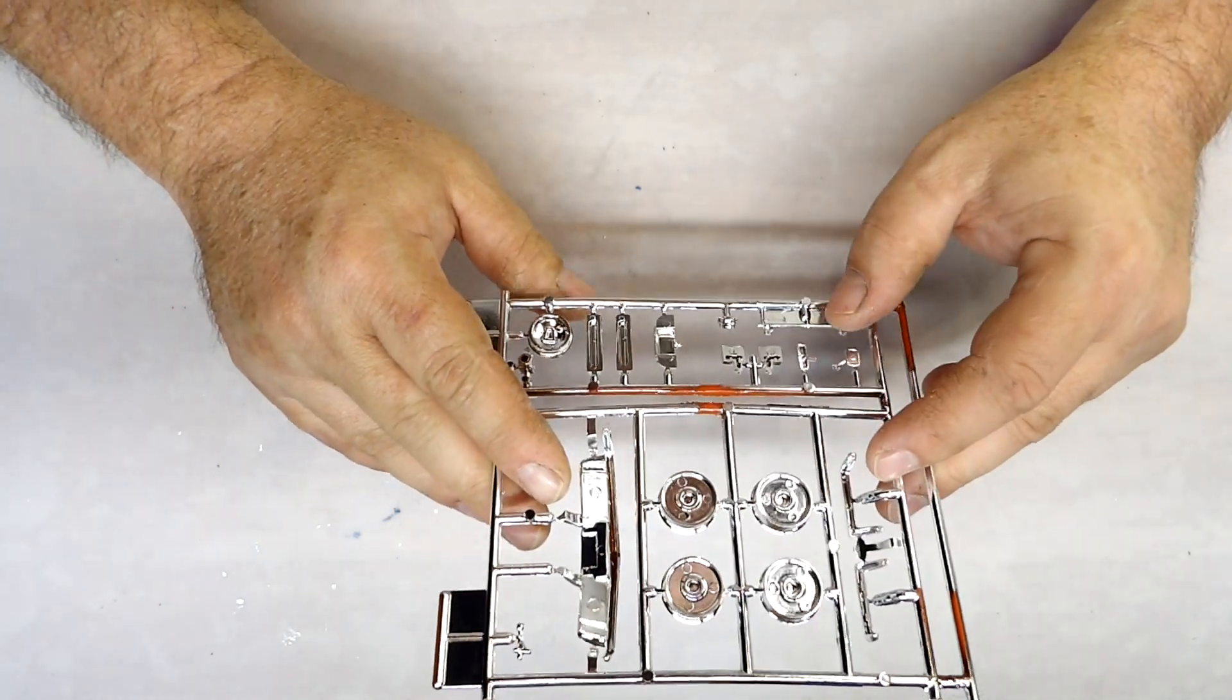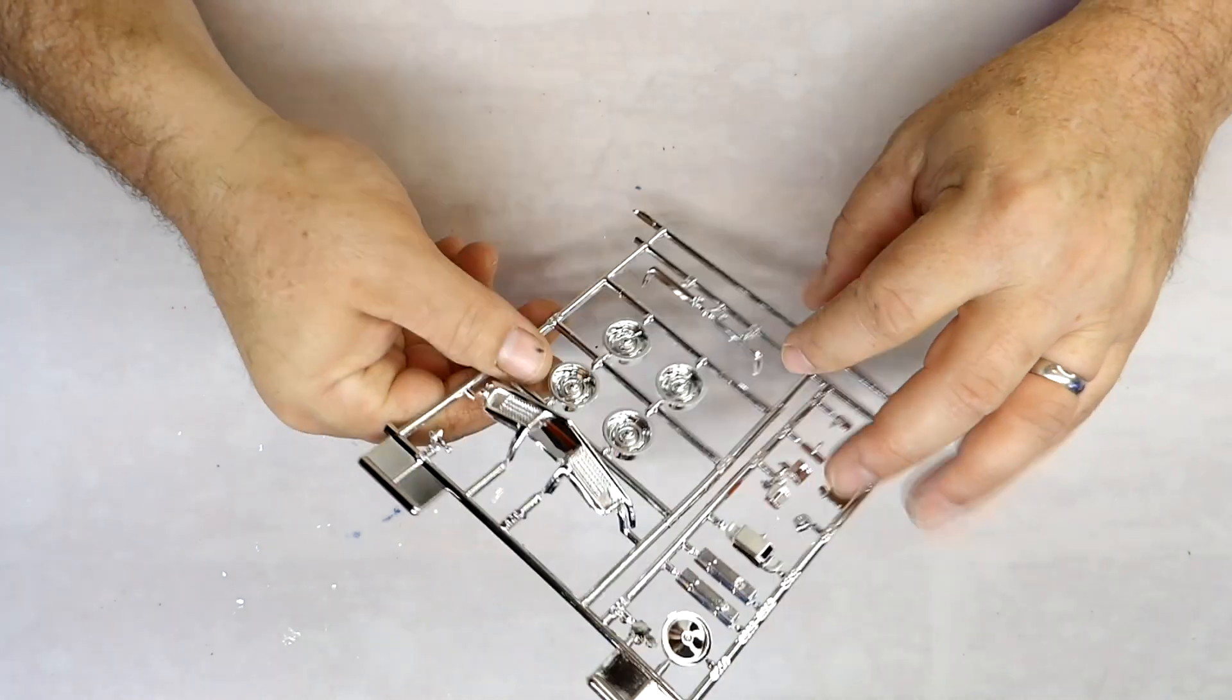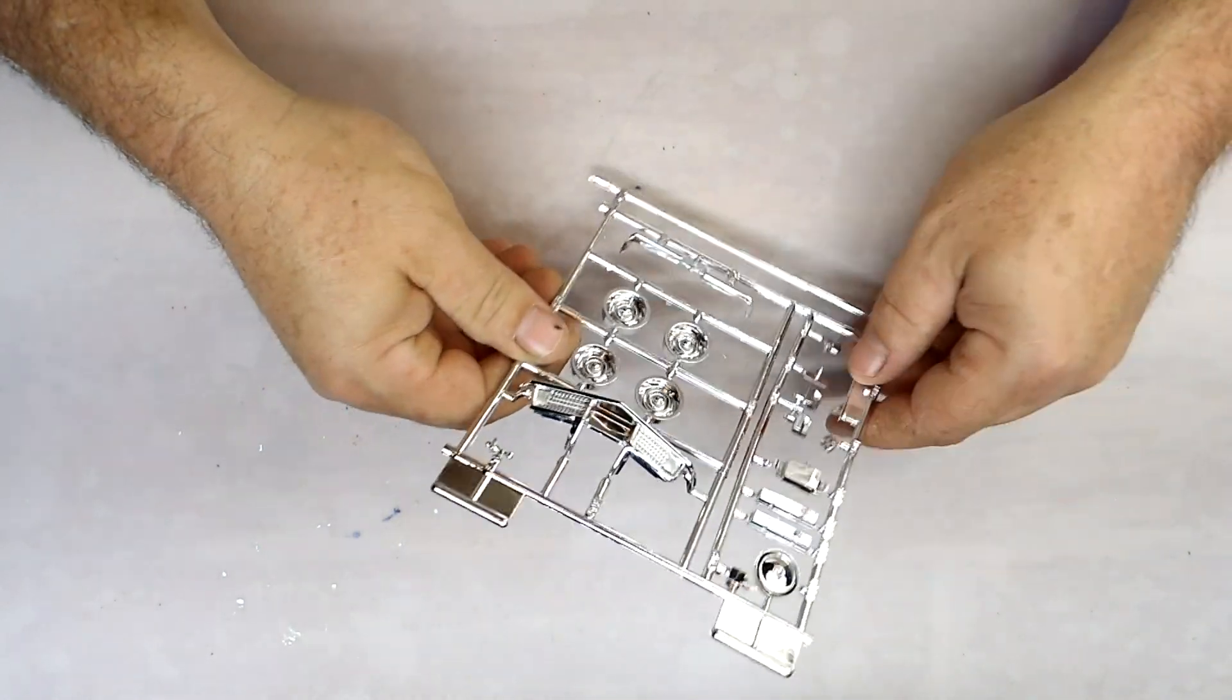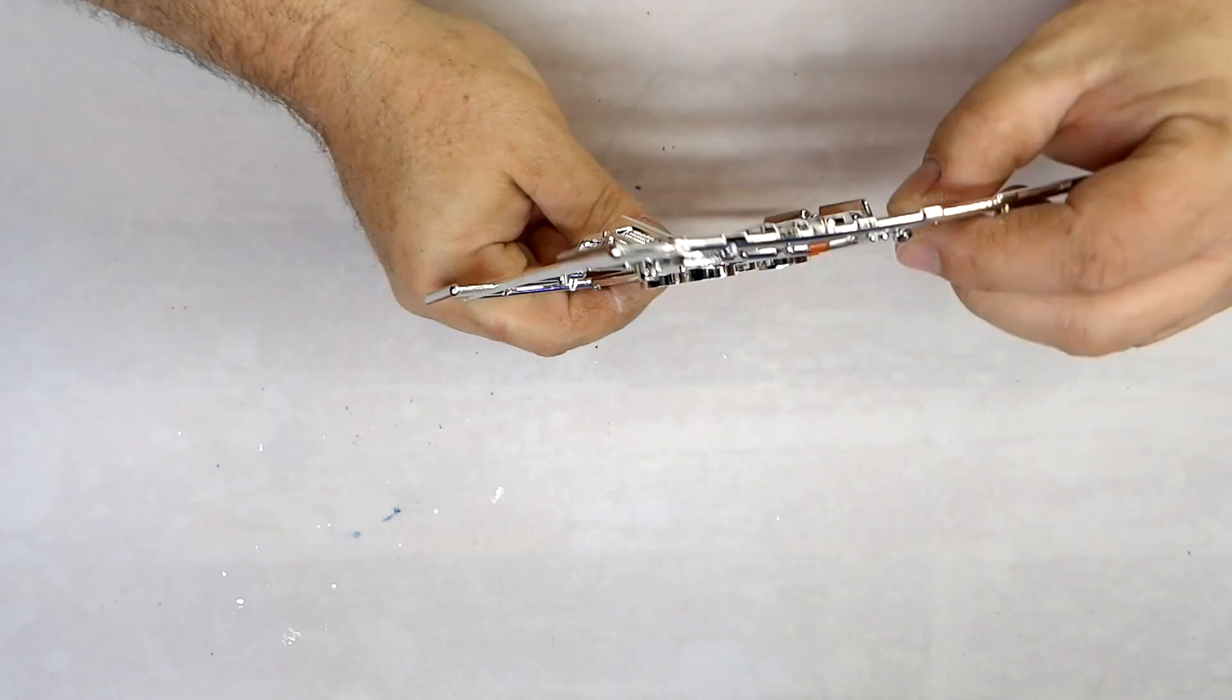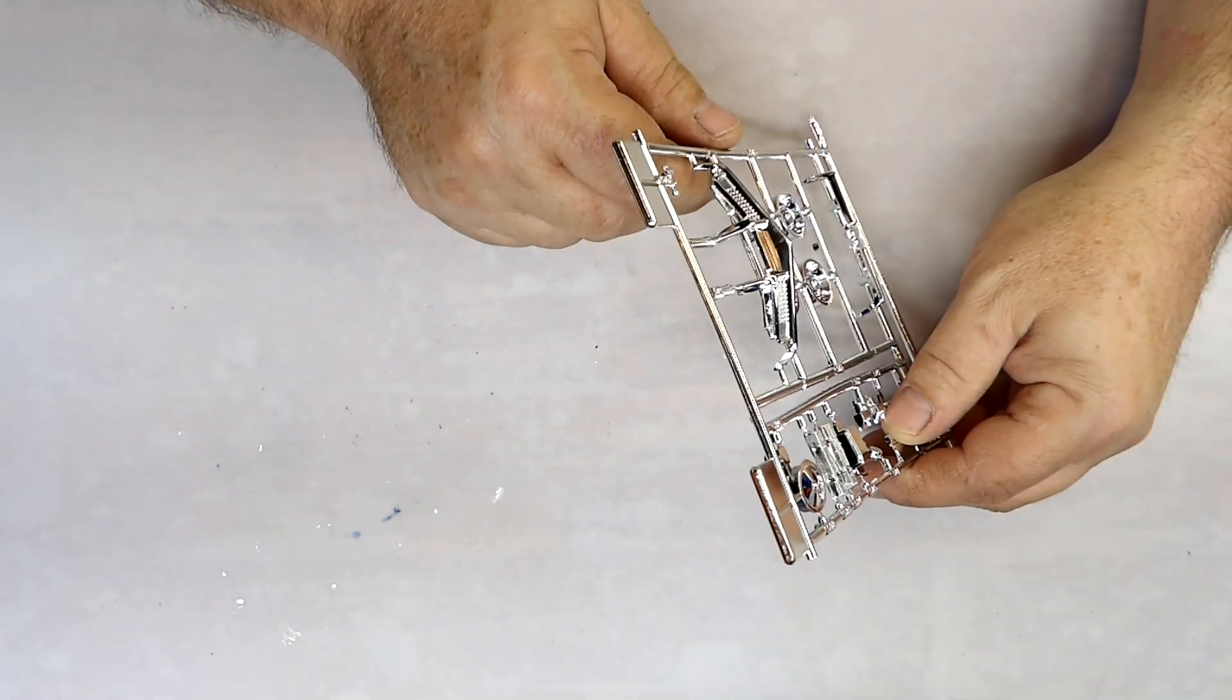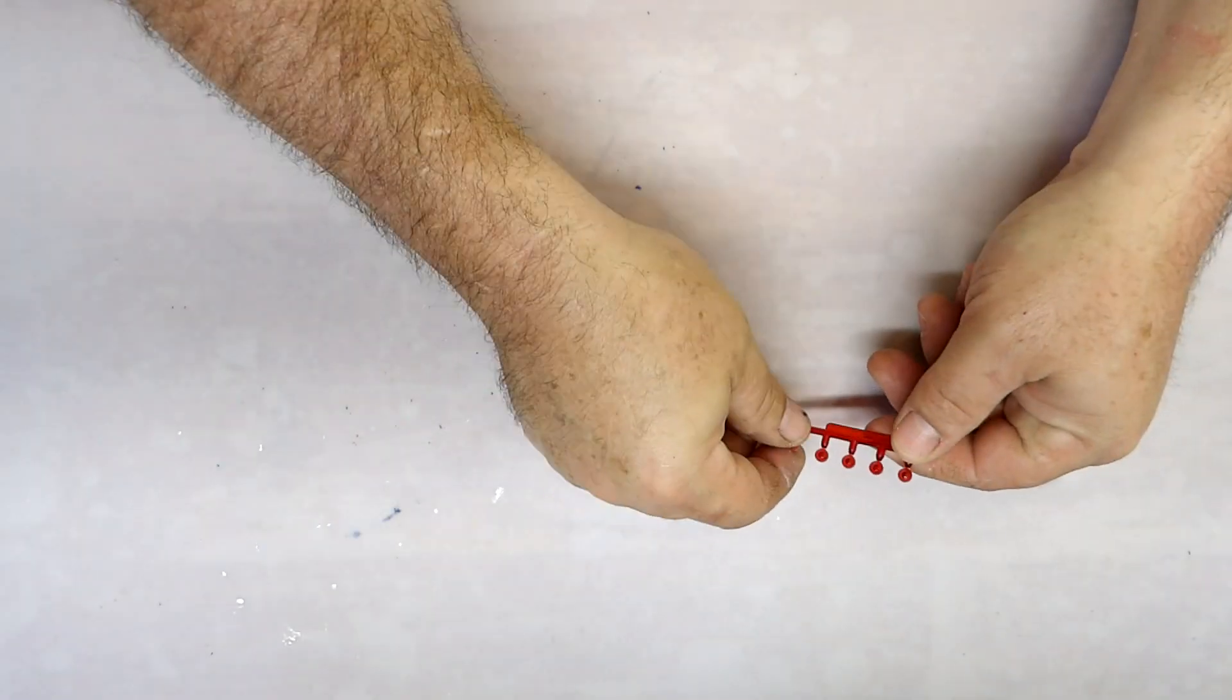Here's some of your mirrors, rearview mirror. Here's your rear bumpers. Here's your front bumper. Here's your rear tail lights.